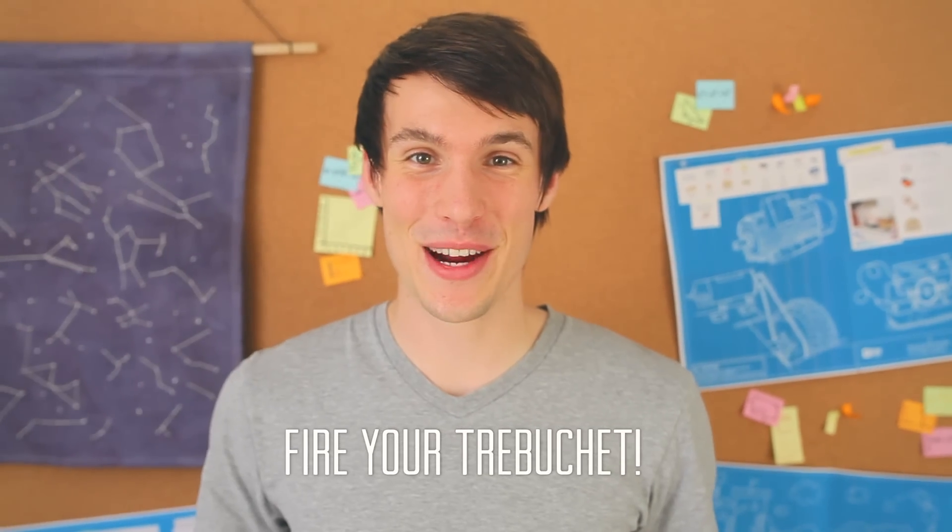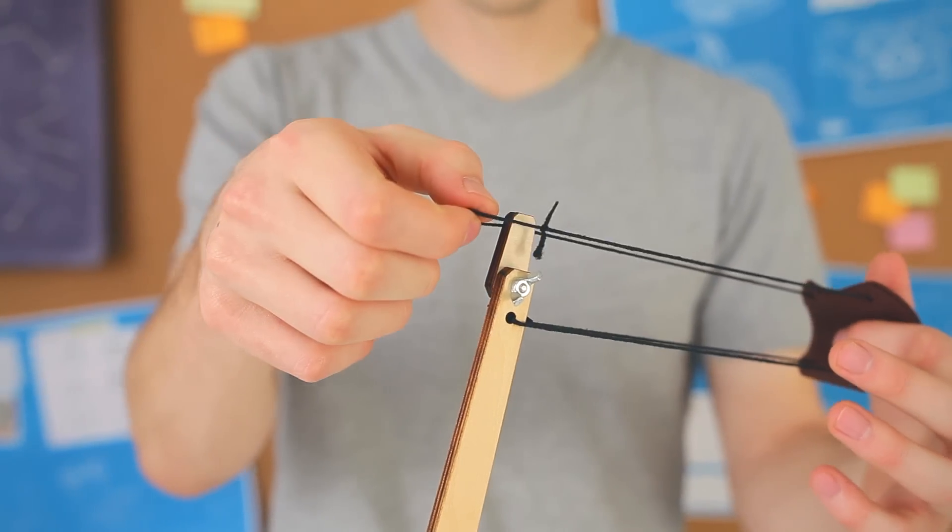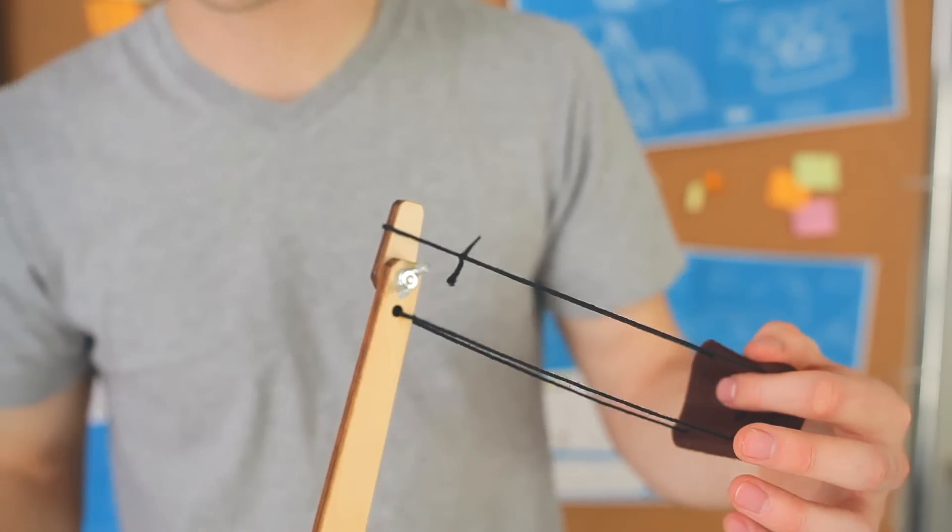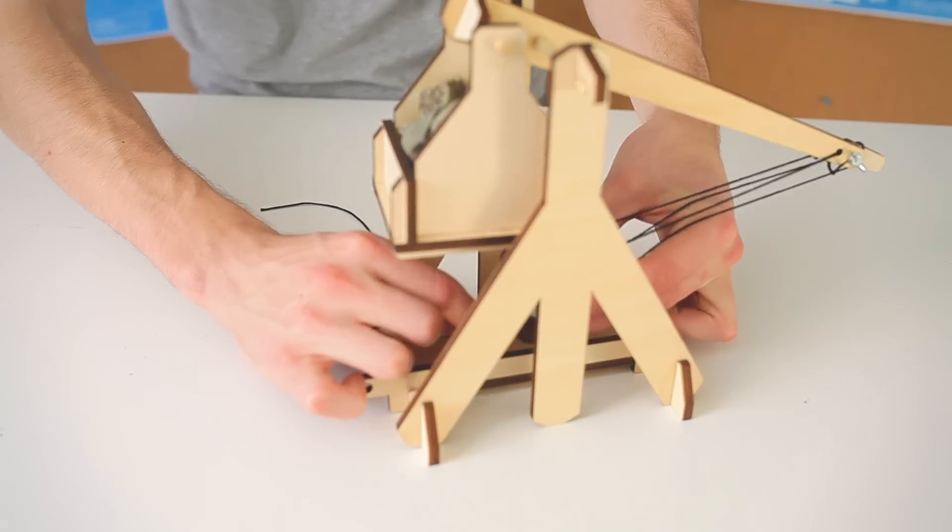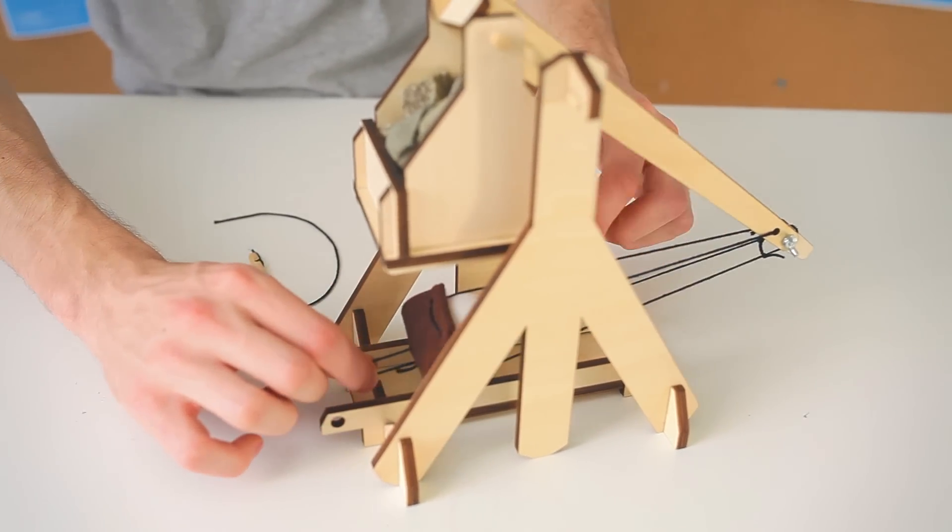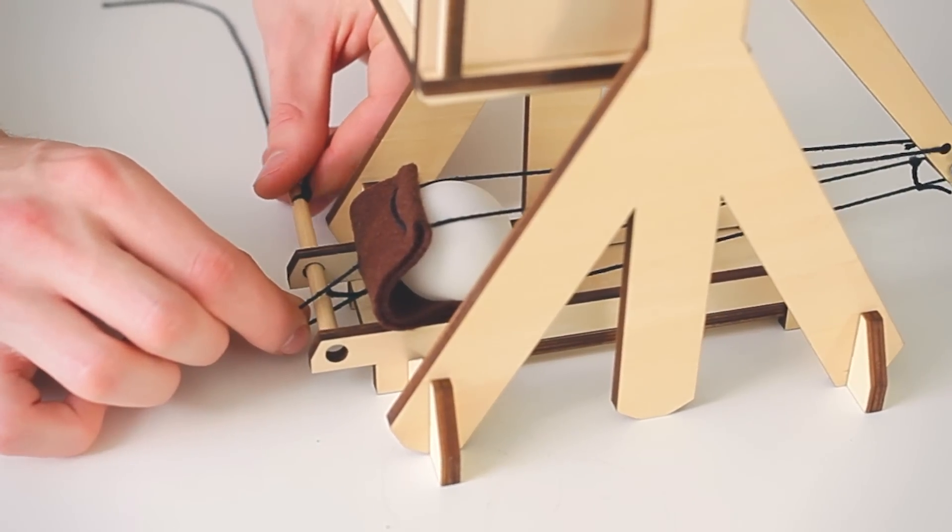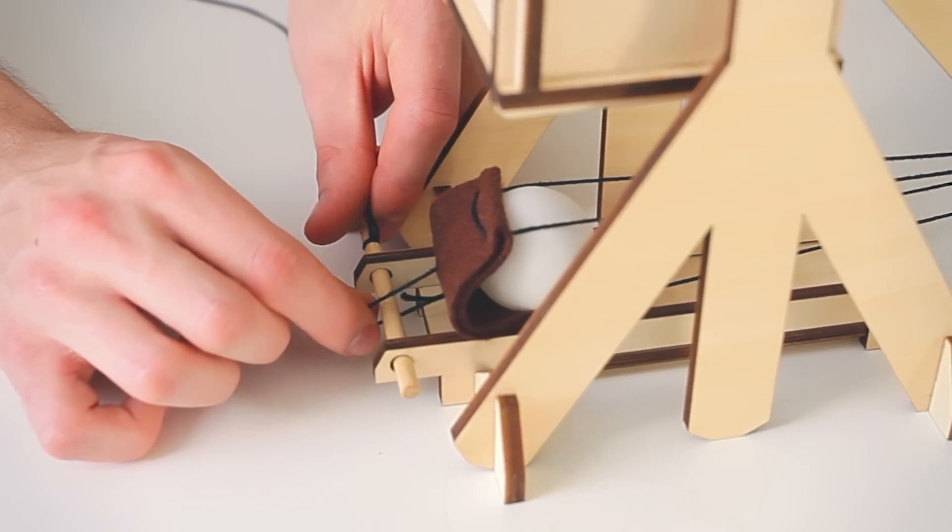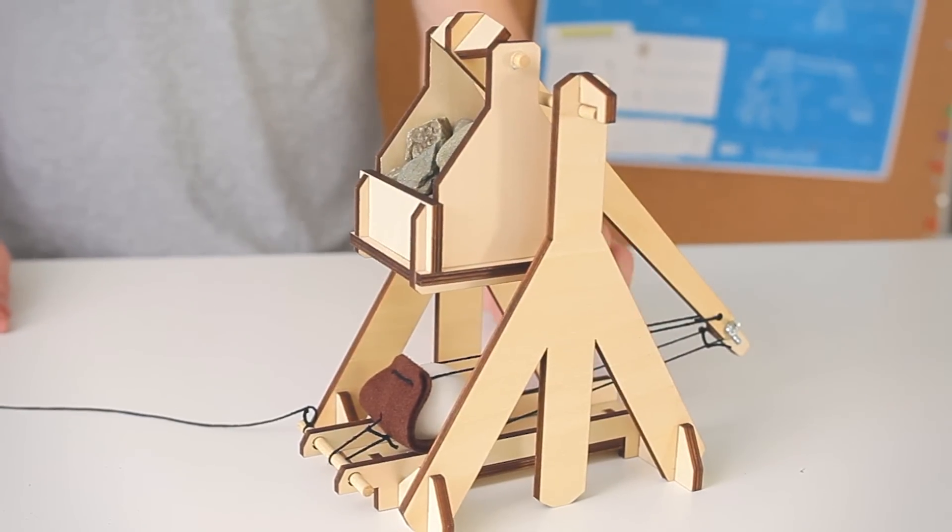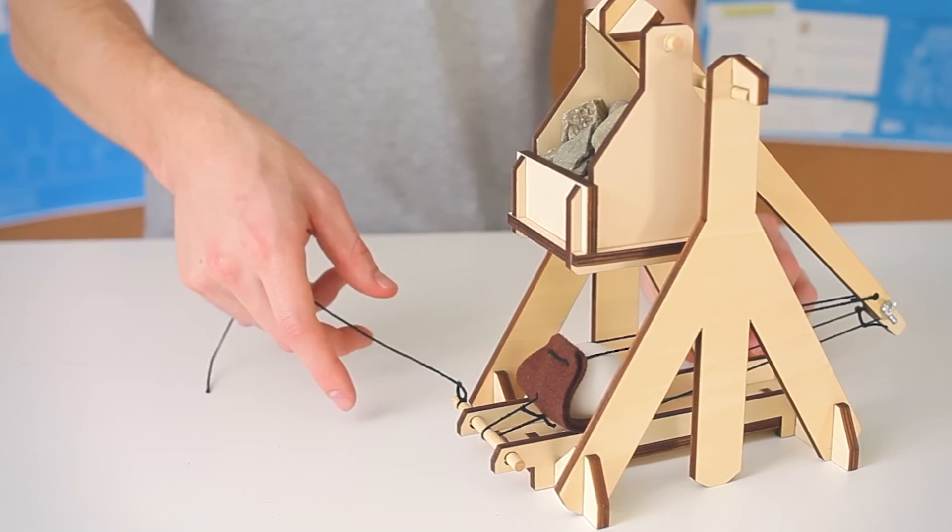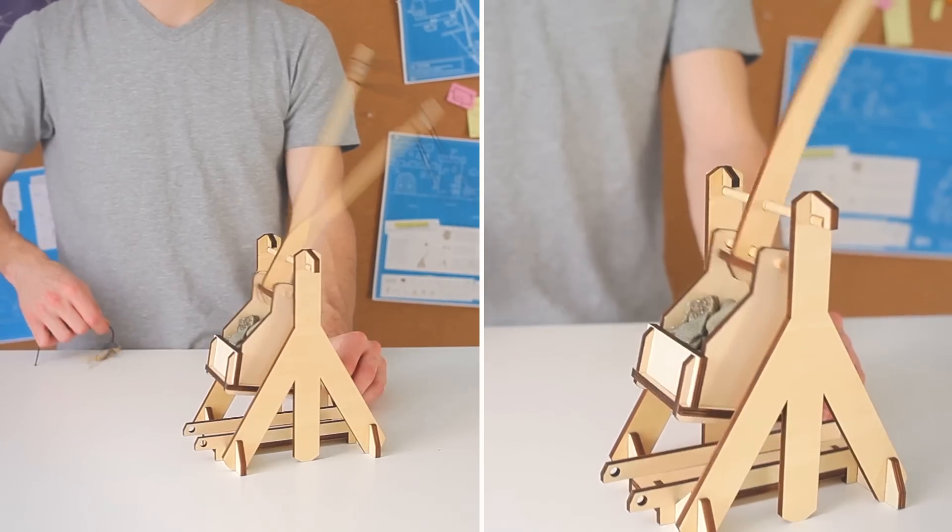All right now let's learn how to fire this thing. First slip the second large loop over the very end of the lever arm on your trebuchet. Take the pouch, pull it through all the way underneath your counterweight. Hold on to the circle of string and then put your firing pin through the laser cut wood, the string, and then again through the wood. Now your trebuchet is locked and loaded. To fire, put one hand on the base to hold it steady and then grab the string on your firing pin. Then give it a quick tug.